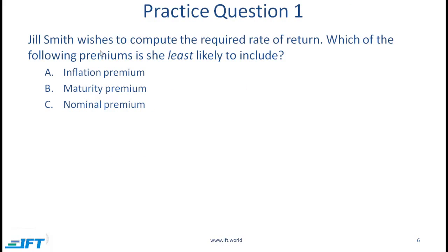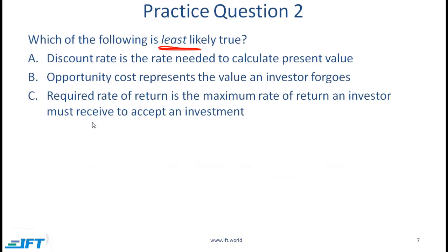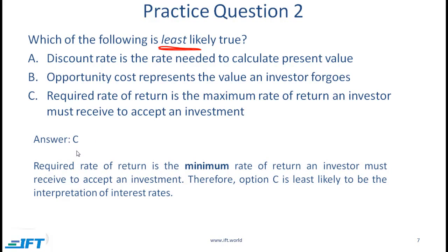Let's look at a practice question. Jill Smith wishes to compute the required rate of return. Which of the following premiums is she least likely to include? The correct answer is C — nominal premium — because while it sounds like a plausible term, it is clearly not included in the list of premiums we covered. Make sure you know all the premiums really well, as questions like this may appear on the exam. The next question: the correct answer is C, because the required rate of return is the minimum rate of return, making option C the statement that is least likely true.